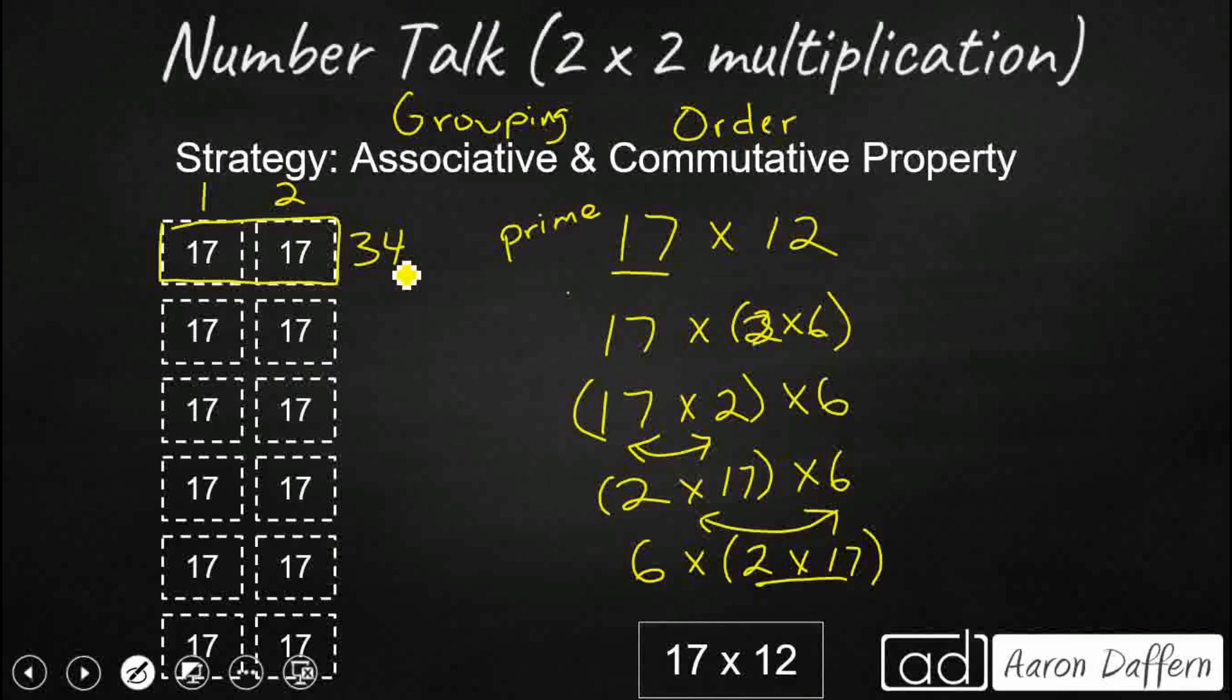So what I have now are 6 groups of 2 groups of 17. And so that means I'm going to skip count by 34s up to my 204. So that's going to be 68, 102, 136, 170, 204.